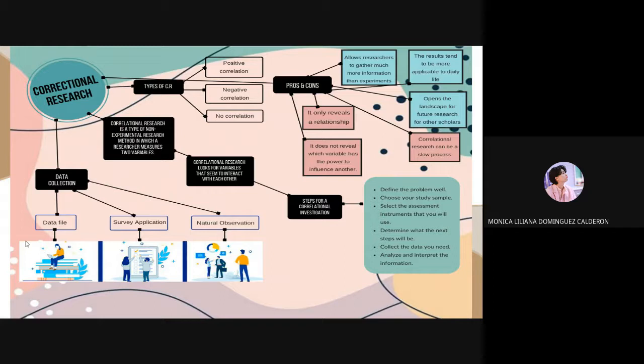And the last one is natural observation. Natural observation is a form of data collection in which the behavior of people is observed in the natural environment, that is where they normally exist. This method is a type of field research. It could be that an investigator is observing people in a grocery store, movie theater, schoolyard, cafeteria, etc. Then we have some pros and cons about correlational research.